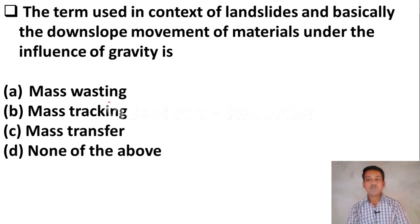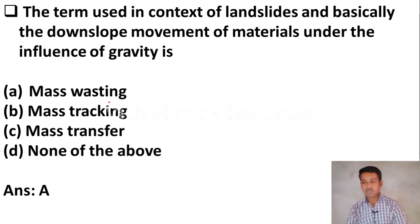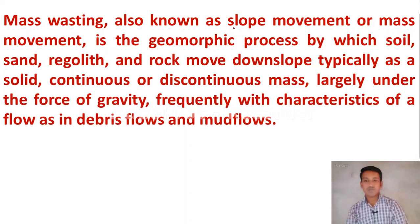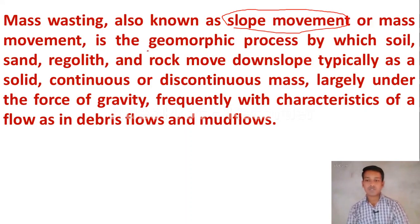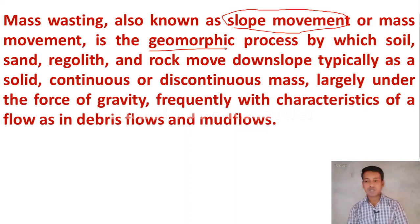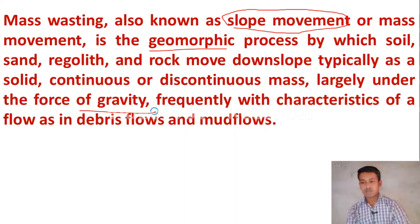The next question: the term used in the context of landslides and basically the downslope movement of materials under the influence of gravity is. Option A, mass wasting. Option B, mass tracking. Option C, mass transfer. Option D, none of the above. The right answer is Option A, mass wasting. It is also known as slope movement or mass movement. Mass wasting is the geomorphic process by which soil, sand, and rock move downslope as a solid or discontinuous or continuous mass under the force of gravity.